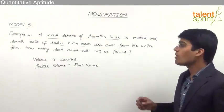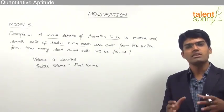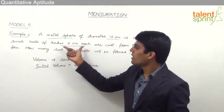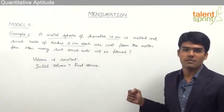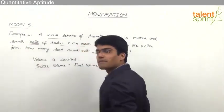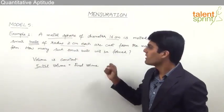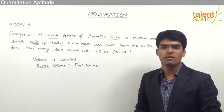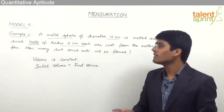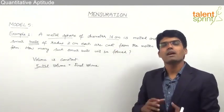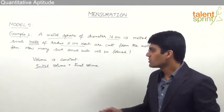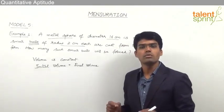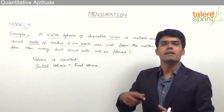In this case, we find that a metal sphere of diameter 16 centimeters is melted. Initially we have only one metal sphere of diameter 16 centimeters. It is melted and small balls of radius 2 centimeters each are cast from it. A ball is a sphere itself, so here a sphere is being converted into small spheres of radius 2 centimeters each. We need to find how many such small spheres will be formed.